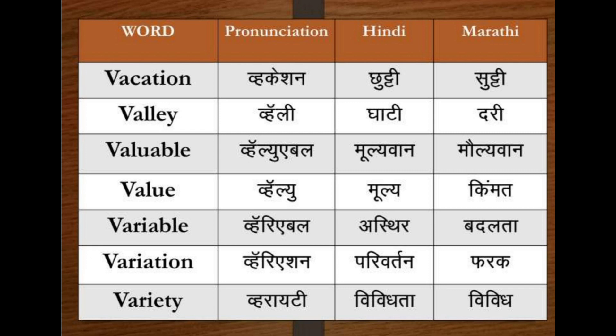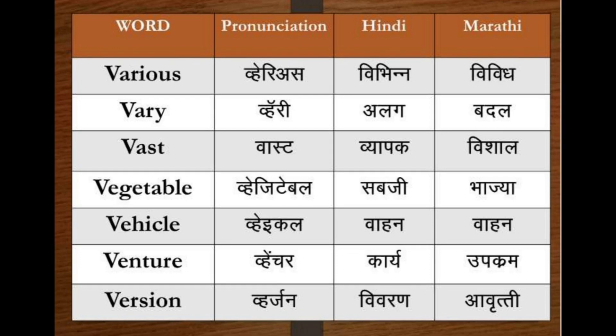Variable — Asthir, Badalta. Variation — Parivartan. Variety — Vividata, Vivid. Various — Vivid. Vary — Alag, Badal.